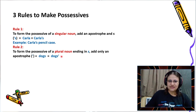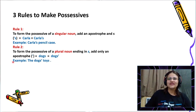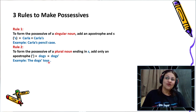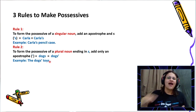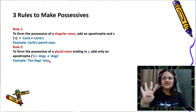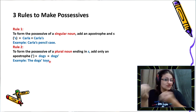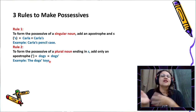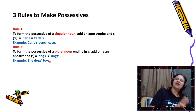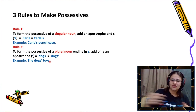Here, when I have a singular noun I add both: apostrophe and an S. But when I have a plural noun ending with an S, I already have that S, so I just add the apostrophe. For example: the dogs' toys — that means I have more than one dog and these toys belong to the dogs.